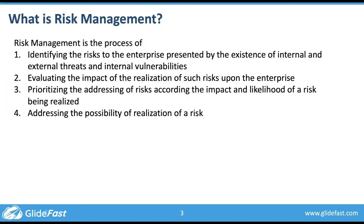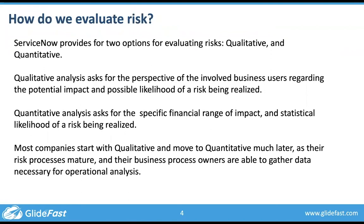If you ride a motorcycle, you address those risks by wearing a helmet and other safety gear. We always address risk — we just don't realize it. ServiceNow gives us two different styles of evaluating risk, out-of-the-box. The ability to flip between the two is controlled with a system property. The two perspectives ServiceNow provides are qualitative versus quantitative analysis. Qualitative analysis is very subjective — we're asking for a simple perspective: what do you think the impact is? ServiceNow gives a five-point scale, from very low to very high.